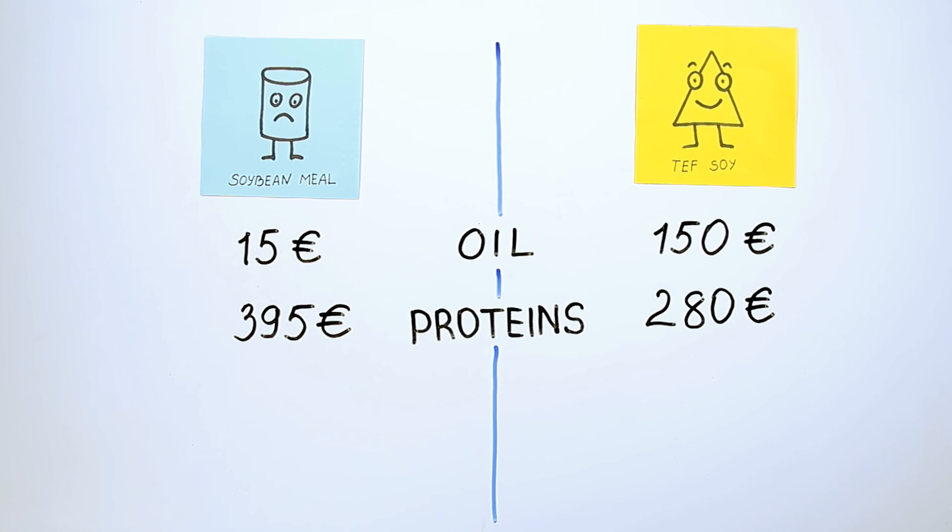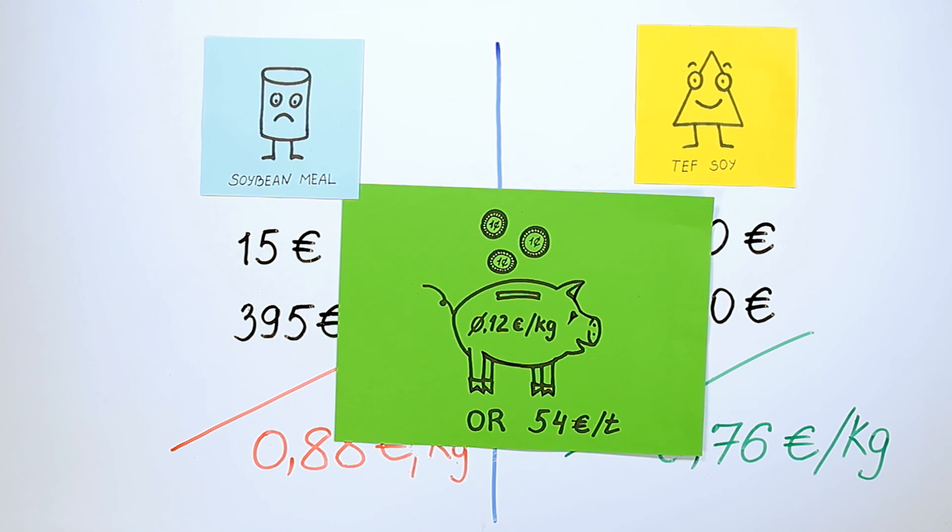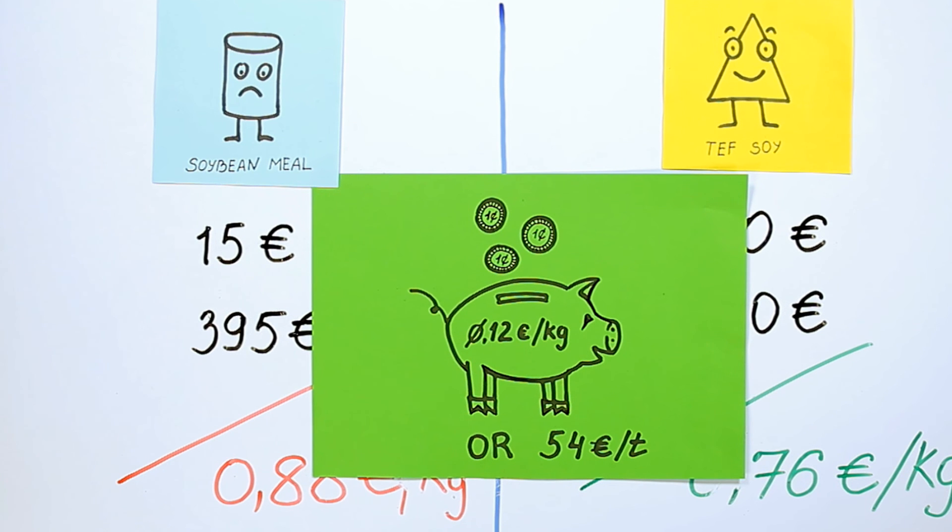Total price: 1 kg protein, soybean meal 0.88 EUR, TEF soy 0.76 EUR. When purchasing 1 tonne of TEF soybean, you save 0.12 EUR per 1 kg of protein, which makes 54 EUR per 1 tonne of meal.